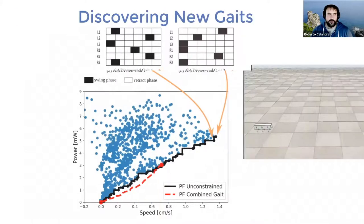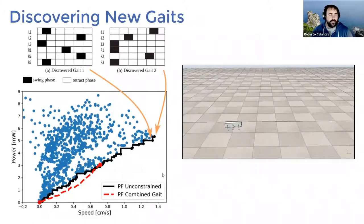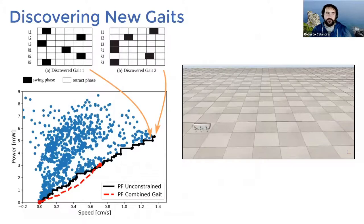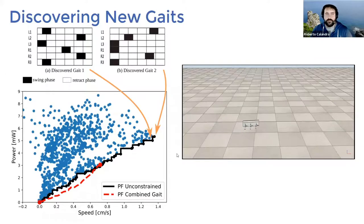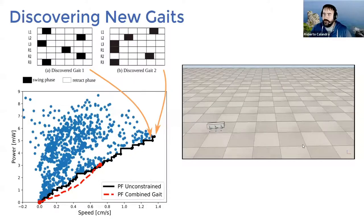Even more interesting: we tried to discover gates that don't exist in nature by opening up more parameters of the CPG generators. We were actually able to find gates that were almost twice as fast, albeit at higher energy cost. You can see one of these gates where some legs are not doing much — the middle ones taking very tiny steps — but performance-wise it's doing great, opening entirely new performance space.